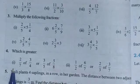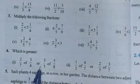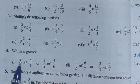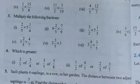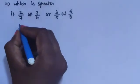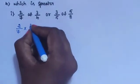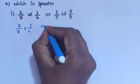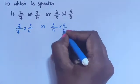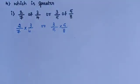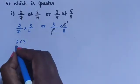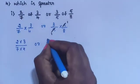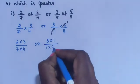Coming to the next question, question 4: which is greater? Sub-question 1: 2/7 of 3/4 or 3/5 of 5/8. Multiply 2/7 into 3/4 or 3/5 into 5/8. In 3/5 into 5/8, the 5s get cancelled. So we have 2 into 3 divided by 7 into 4, or remaining 3 into 1 divided by 1 into 8.